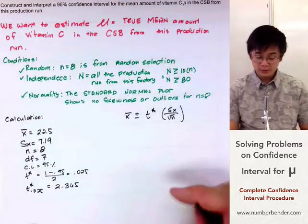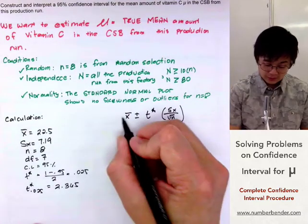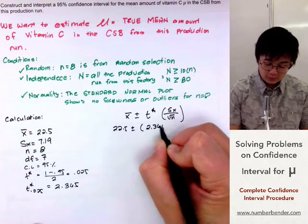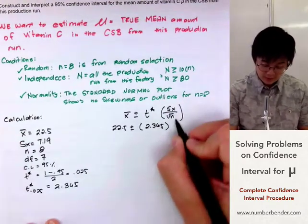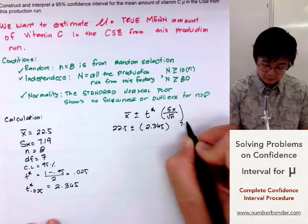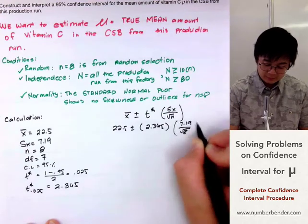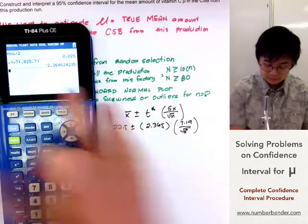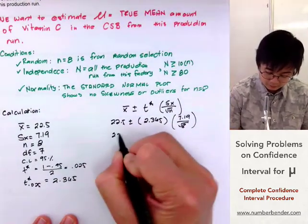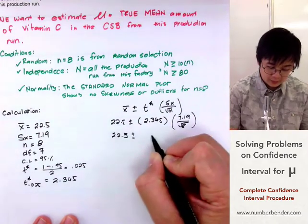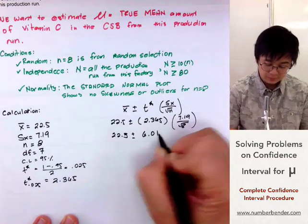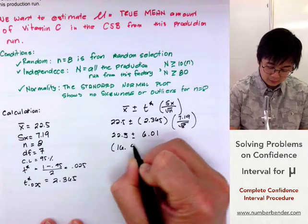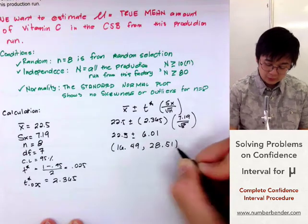So these are the numbers that we're going to be using in finding our confidence interval, which is 22.5 plus or minus the critical value. We always use the positive value of the critical value. Sx is 7.19 divided by the square root of 8. So we'll have 22.5 plus or minus the margin of error of 6.01. So our confidence interval will be at 16.49 and 28.51 using our calculator.